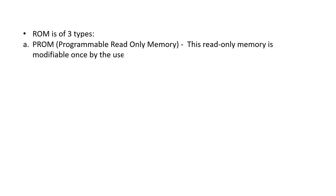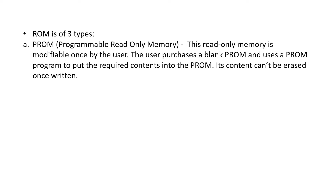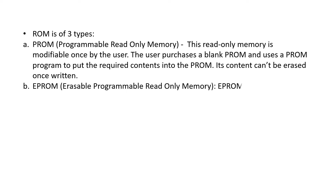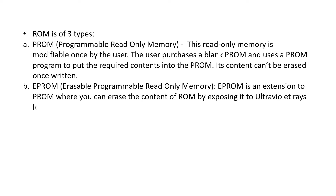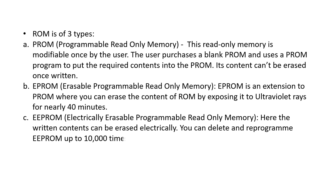ROM is of three types: PROM, EPROM, and EEPROM. PROM is Programmable Read-Only Memory — it is modifiable once by the user; the user purchases a blank PROM and uses a PROM program to put the required contents into it, and its content can't be erased once written. EPROM is Erasable Programmable Read-Only Memory, an extension to PROM where you can erase the content by exposing it to ultraviolet rays for nearly 40 minutes. EEPROM is Electrically Erasable Programmable Read-Only Memory — the written contents can be erased electrically, and you can delete and reprogram EEPROM up to 10,000 times.